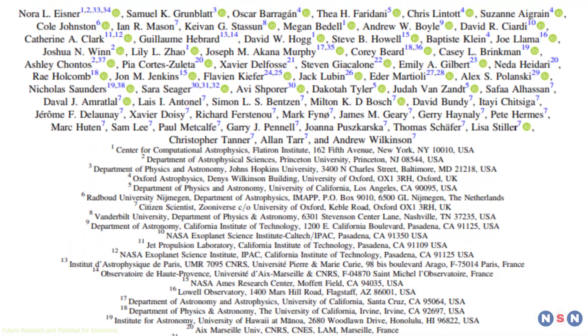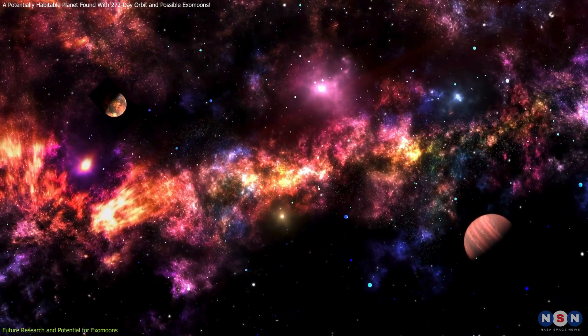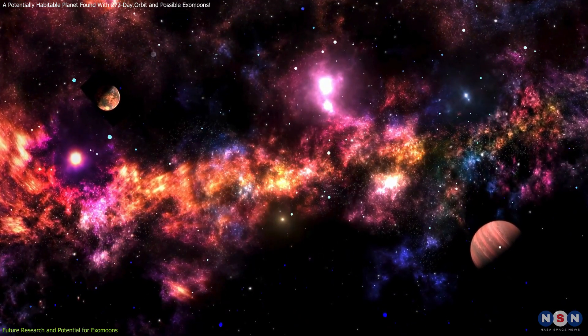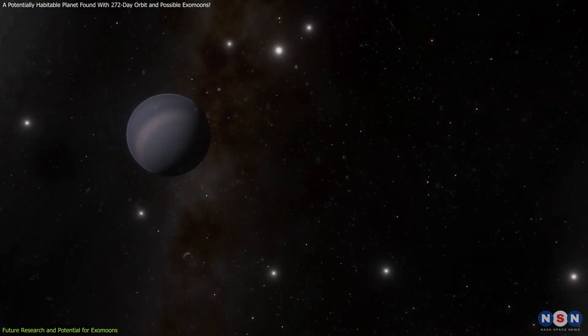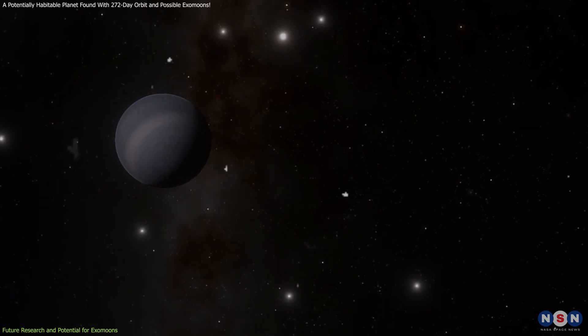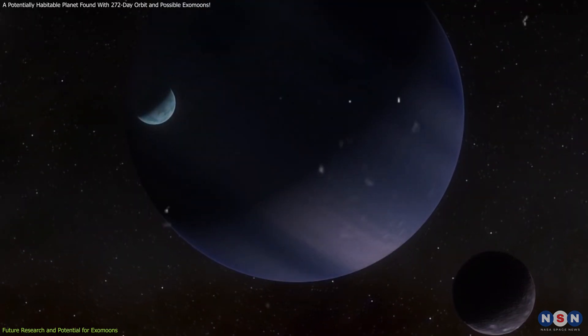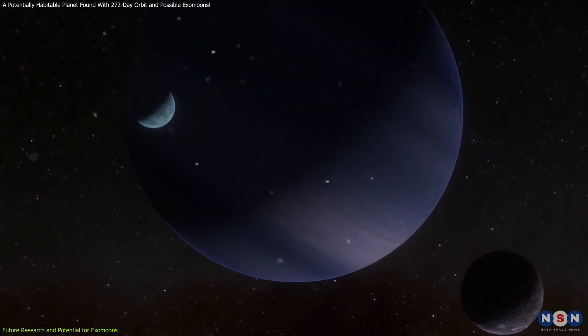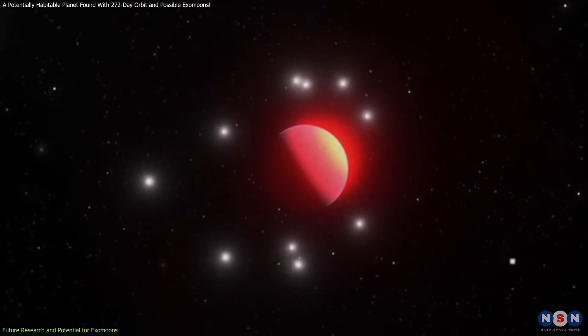While the discovery of this exoplanet is groundbreaking on its own, the potential for future research and the search for exomoons around this planet adds even more excitement. Exomoons, or moons orbiting exoplanets, could play a crucial role in habitability, affecting climate, tides, and other environmental factors, so the possibility of moons orbiting around it is an exciting idea.